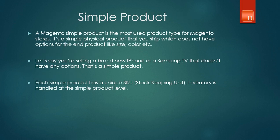Simple products are the most commonly used product in Magento. Think of any product that doesn't have any options like size or color that you want to sell — think of an iPhone or a Samsung TV. Each simple product has something called a SKU number, which is a stock keeping unit. Simple products are the most important because most of the other products we'll discuss are variations of simple products.